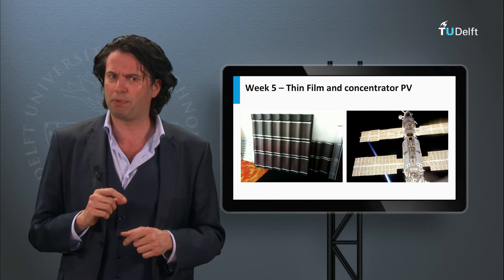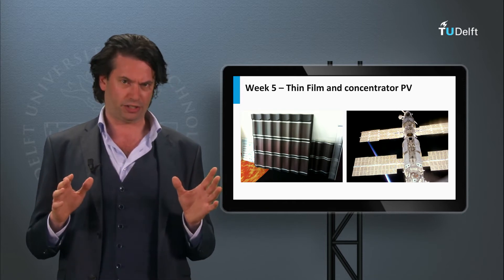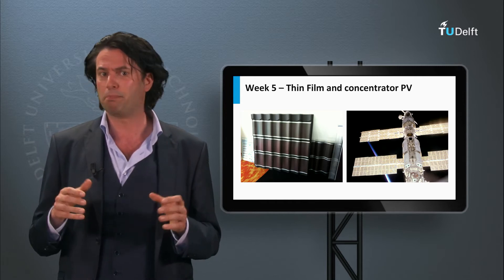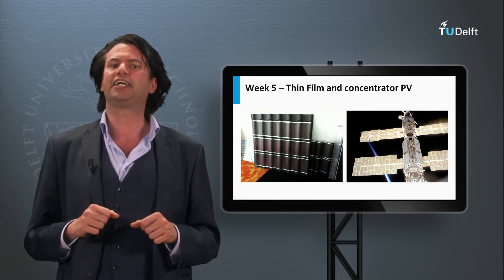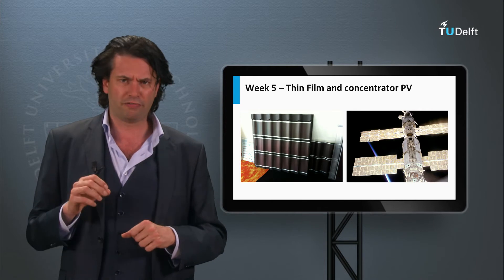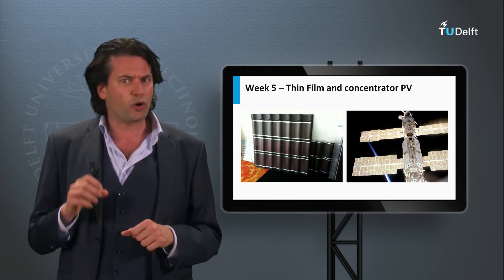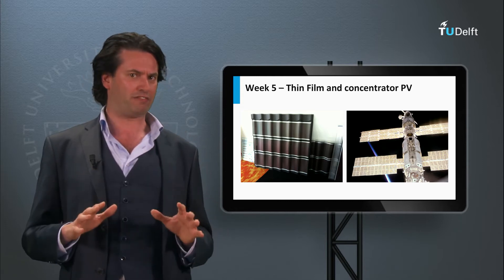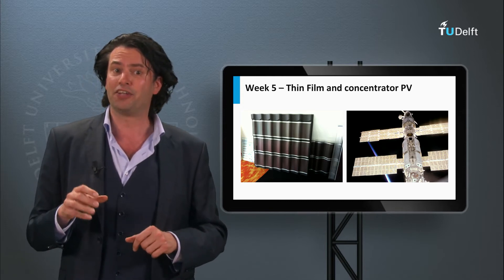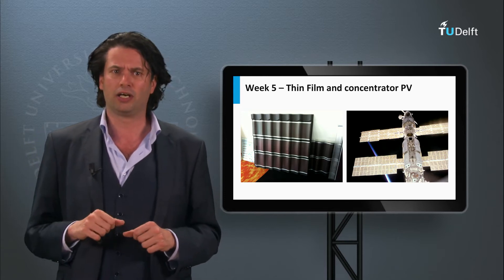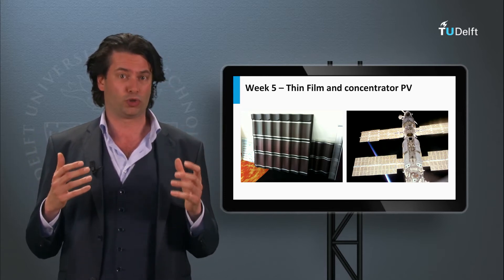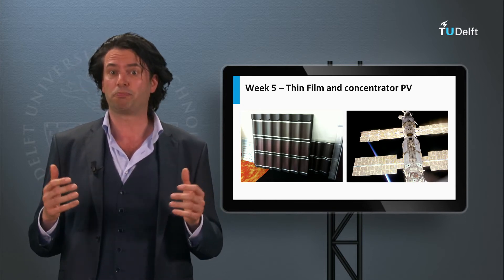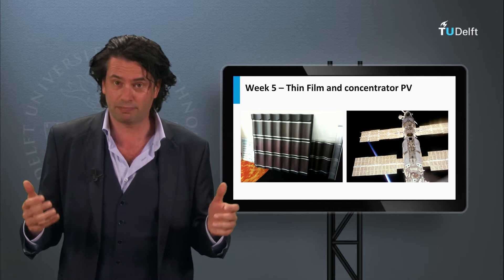We have also touched upon the various other PV technologies, like 3-5 semiconductor multijunctions, the cadmium telluride PV technology, the CIGS PV technology, the thin-film silicon technology and the organic-based PV technologies. Every PV technology has its own advantages, such as high conversion efficiencies, abundantly available source materials, low cost price per watt peak, and the possibility to process it on flexible substrates.